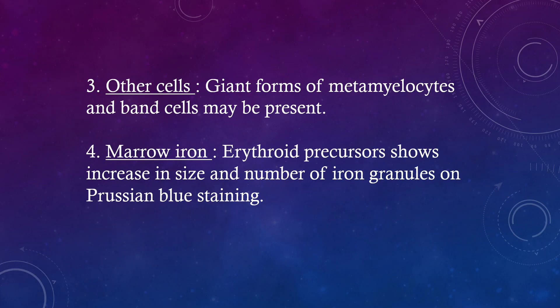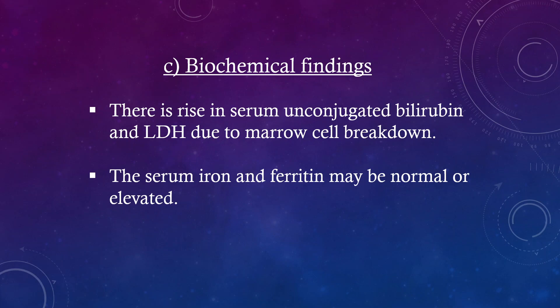Other cells: Giant forms of metamyelocytes and band cells may be present. Marrow iron: Erythroid precursors show an increase in size and number of iron granules on Prussian blue staining. Biochemical findings: There is a rise in serum unconjugated bilirubin and LDH due to marrow cell breakdown. The serum iron and ferritin may be normal or elevated.